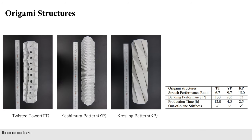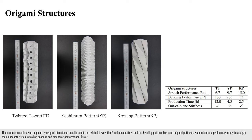The common robotic arms inspired by origami structures usually adopt the twisted tower, the Yoshimura pattern, and the Kresling pattern. For each origami pattern, we conducted a preliminary study to analyze their characteristics in folding process and mechanic performance. As a result, we chose the twisted tower structure.